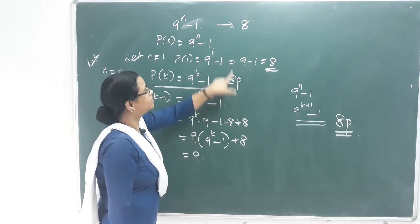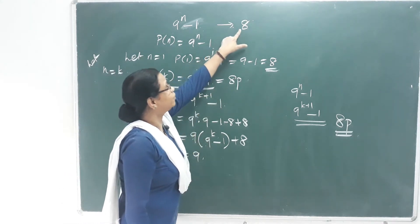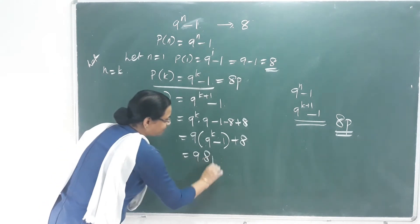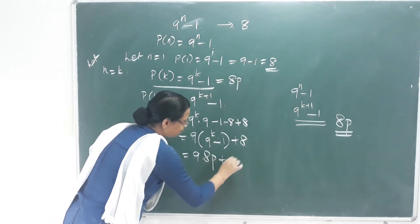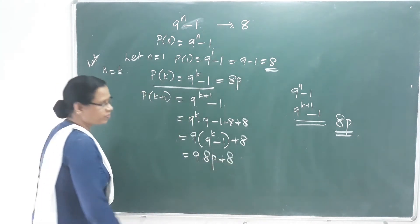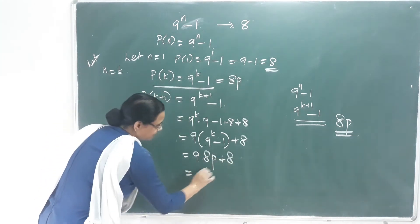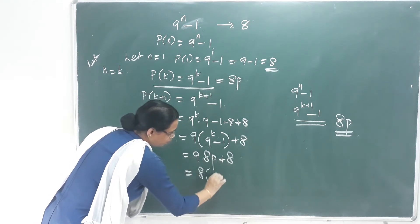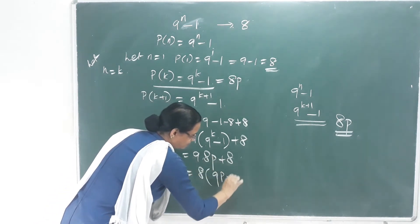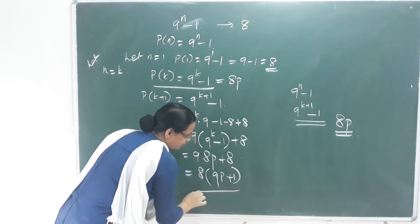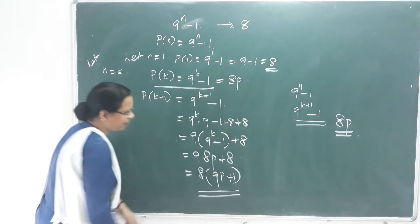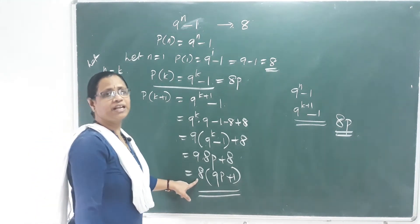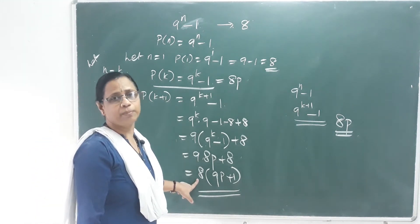This is 8 into multiple. Then 8p plus 8 gives 8 outside, then 9p plus 1. It is a multiple of 8. Hence, mathematical induction is proved.